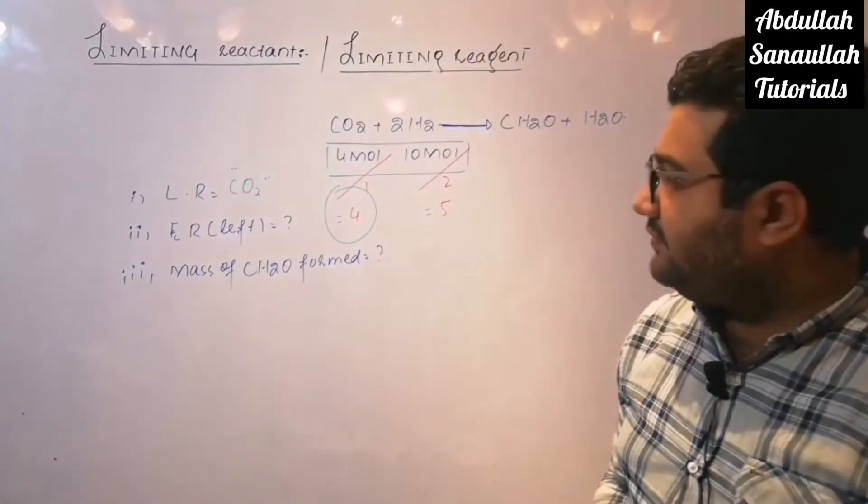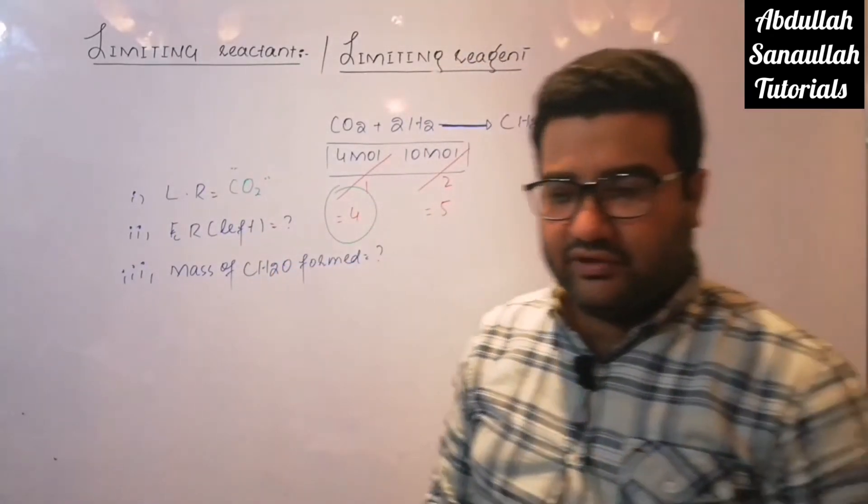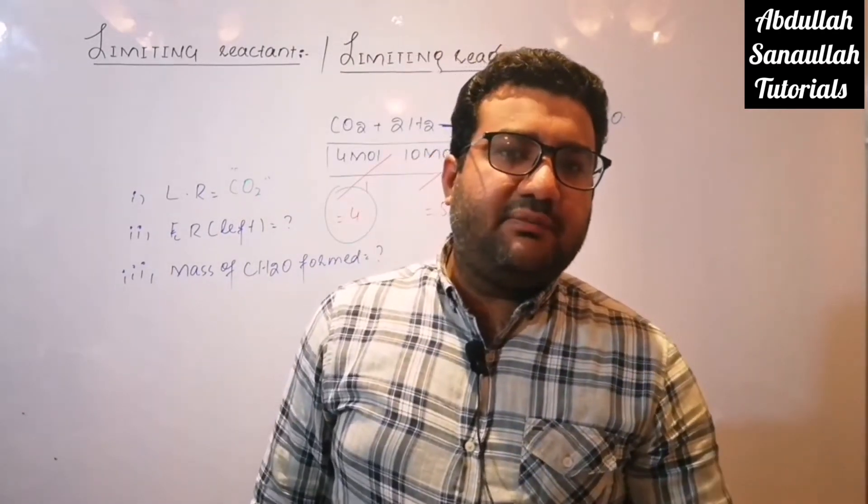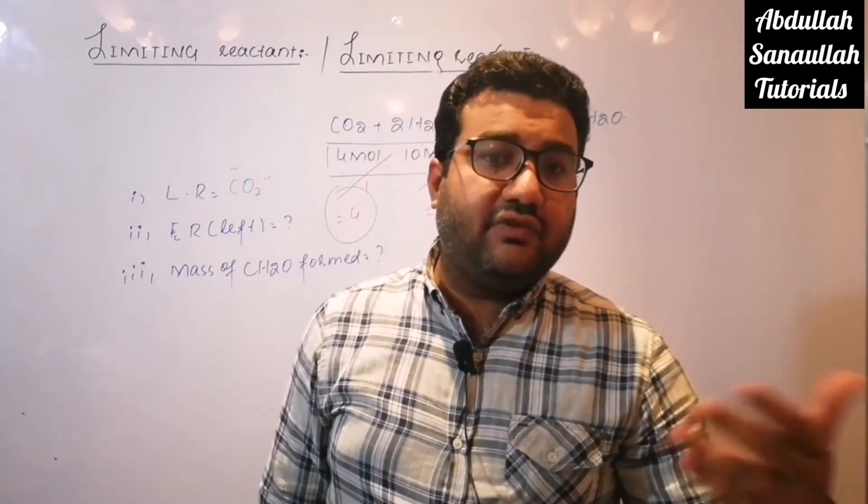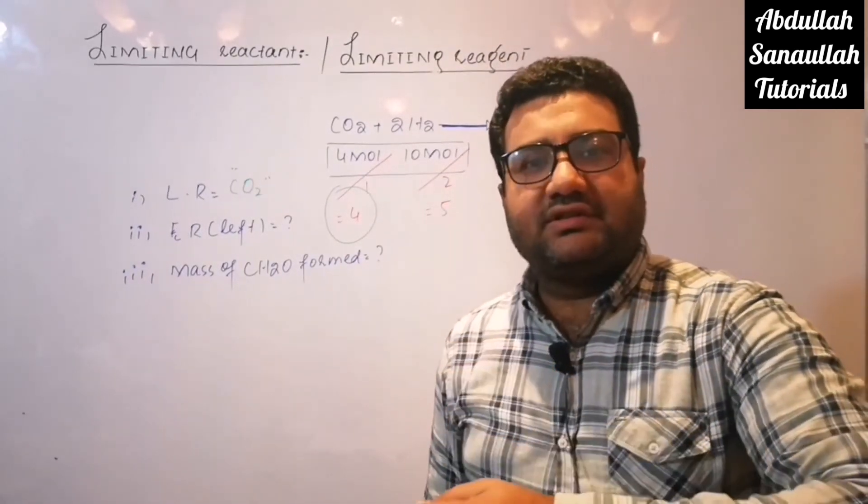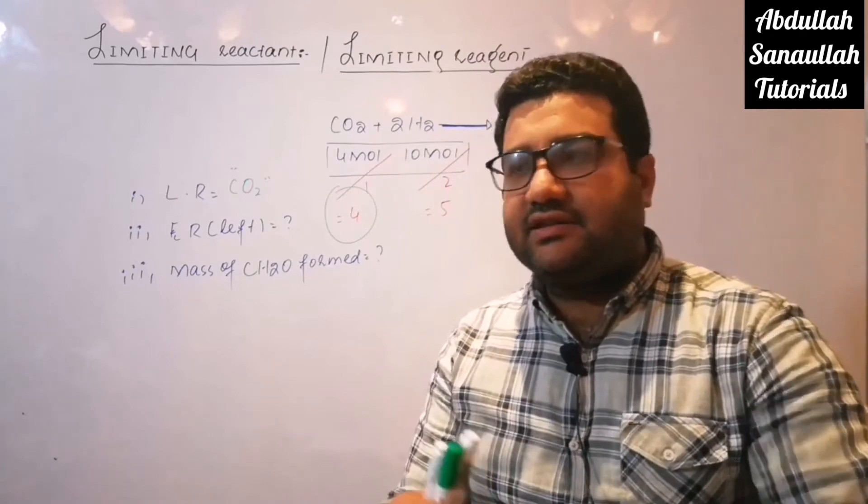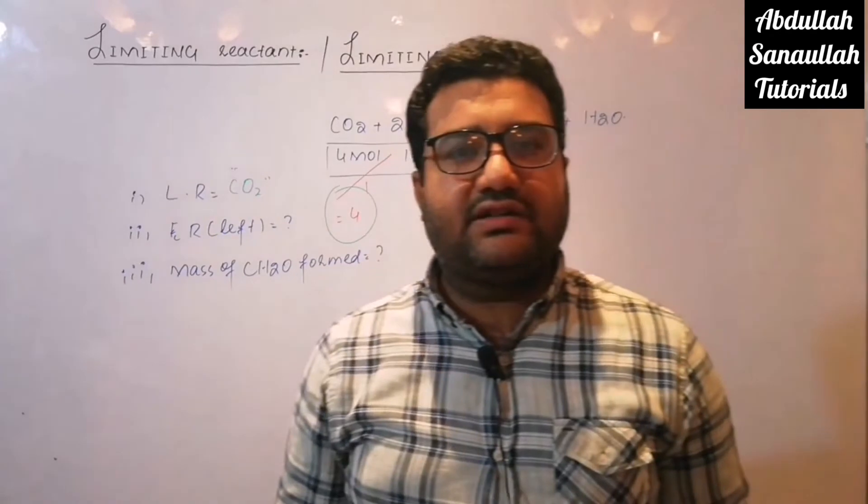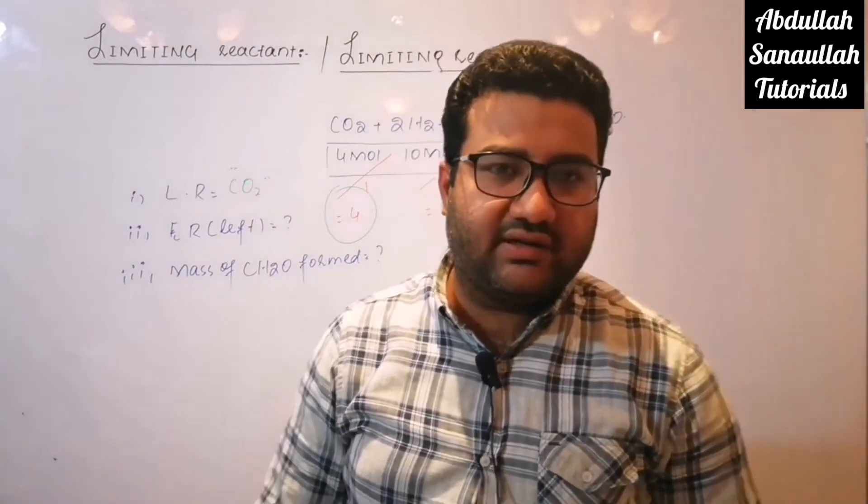Now stop at this point and listen to me very carefully. If the moles of the reactants are not given but the mass of the reactant is given, then what will we do? Then we will first convert the mass into the moles. And after converting the mass into the moles, we will divide it with the coefficients and the reactant in which we will get smaller answer, that will be our limiting reactant.